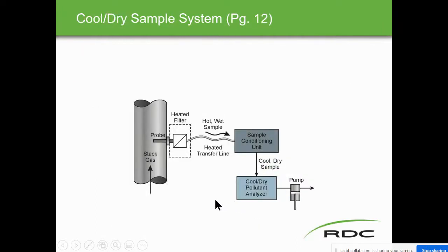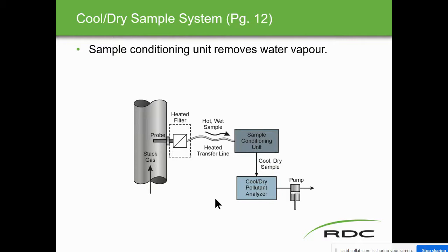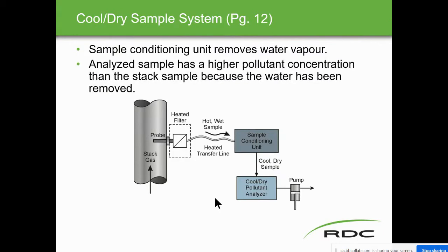Cool-dry sample systems are the opposite of hot-wet. The sample conditioning unit removes water vapor. If my analyzer doesn't do well with water, or depending on what I'm analyzing, we have to remove the water vapor. The analyzed stack sample has a higher pollutant concentration than the stack sample because the water has been removed. We have to report to the government whether we took a hot-wet or cool-dry sample.